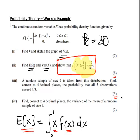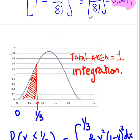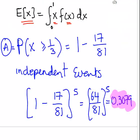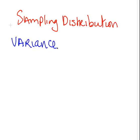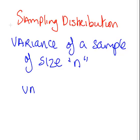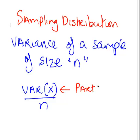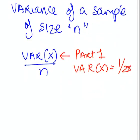Find, correct to 4 decimal places, the variance of the mean of a random sample of size 5. Now this requires a bit of knowledge to do with sampling distributions. Let's go to a blank page there, sampling distributions. And the variance of a sample of size n is simply variance of X over n. This is actually a very straightforward one here. Just as a quick remark, this value here came from part 1. In part 1, we found that the variance of X was 1 over 28. That was in the previous question. So here, 1 over 28 divided by 5 is 1 over 140.